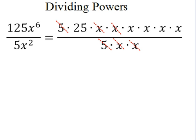What we can actually do then is divide out these common factors. We've got 5 and 5, which divide out to be 1, or just cancel. Remember, cancel means divide. And then we've got two x's being taken away from the top and from the bottom. And that's going to leave us with 25 times x to the fourth power.